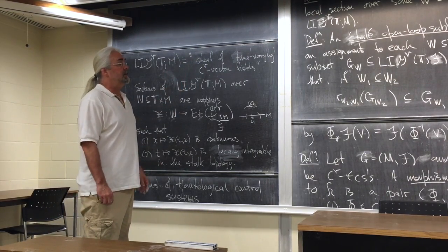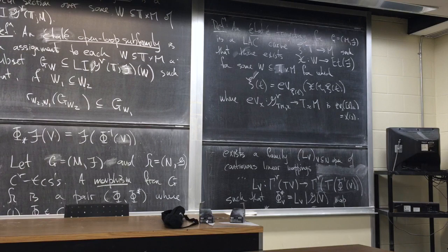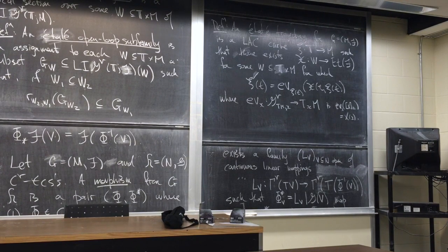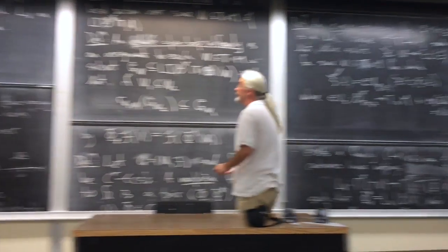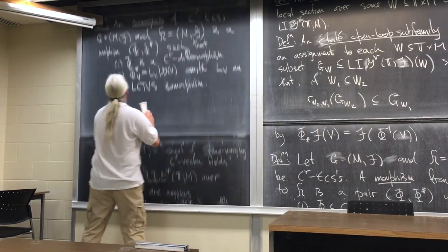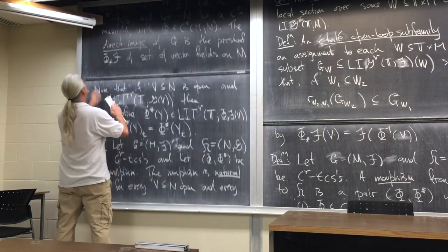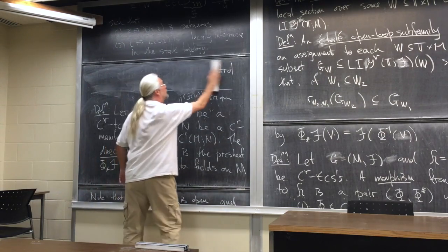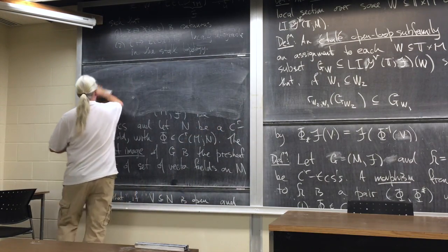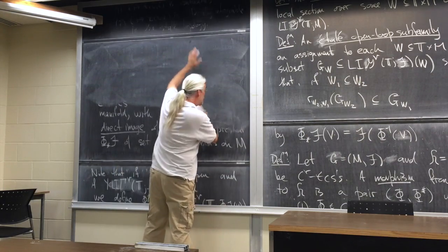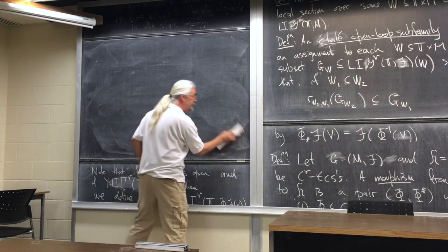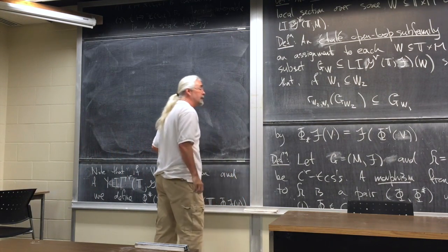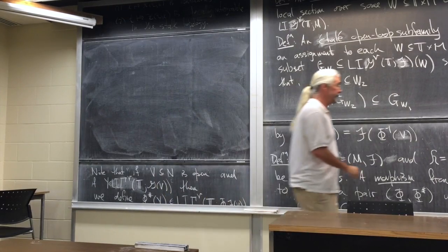This notion of étale trajectory is sufficiently flexible to allow normal control-theoretic constructions. In particular, you can define orbits and apply the standard theorems. An orbit through a point x_0 of the tautological control system G is the set of points c(t) where c is a piecewise constant étale trajectory starting at x_0, with t ranging over positive and negative times.